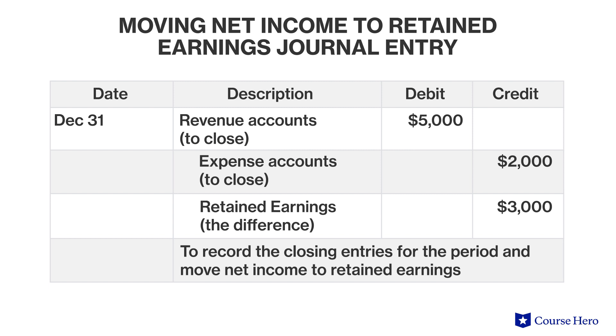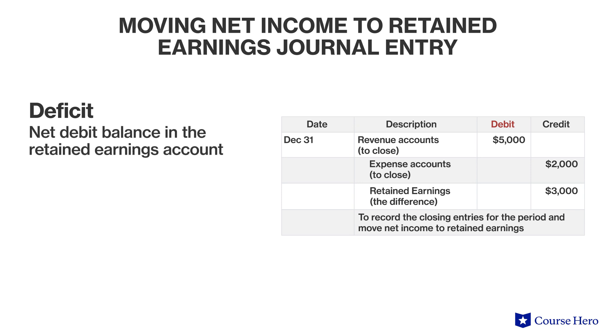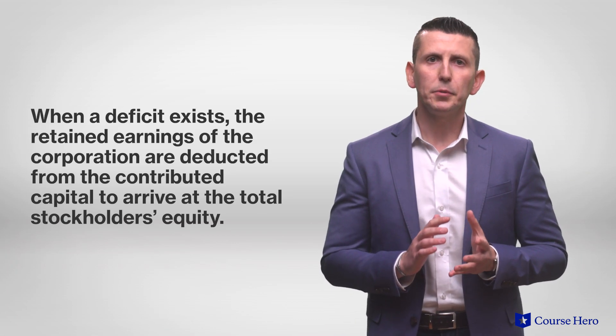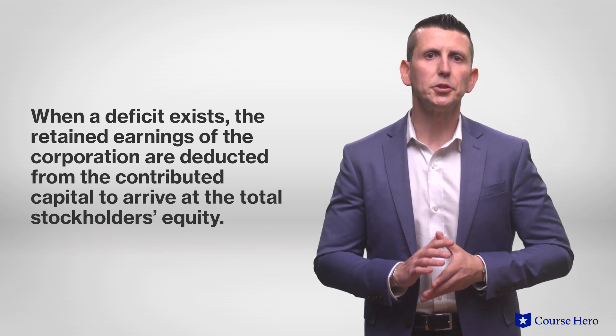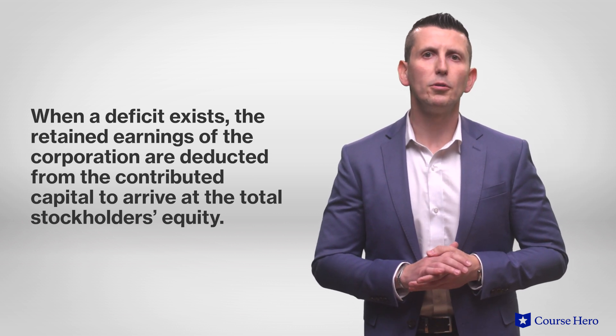Net income from each period increases retained earnings, while net losses and dividends decrease retained earnings. The retained earnings account is an equity account, therefore it carries a normal credit right-side balance. In most cases, retained earnings will have a net credit balance because of income generated by a company. A net debit balance in the retained earnings account represents a deficit. This can happen if a company has experienced net losses on a continuous basis. When a deficit exists, the retained earnings of the corporation are deducted from the contributed capital to arrive at the total stockholders' equity.